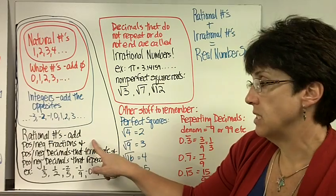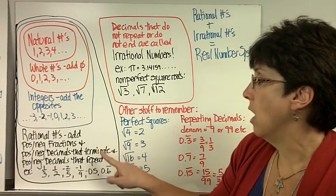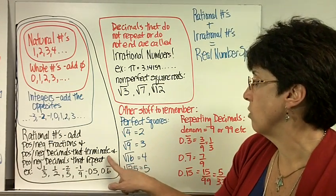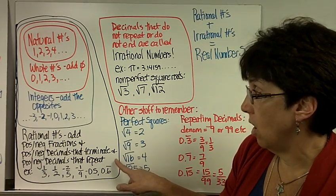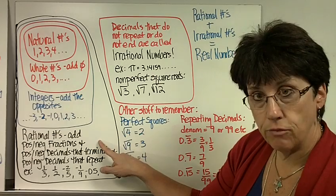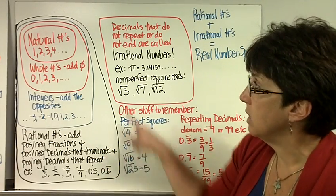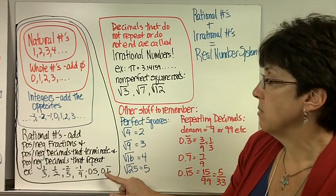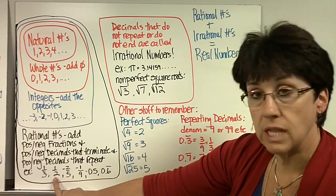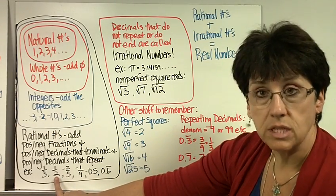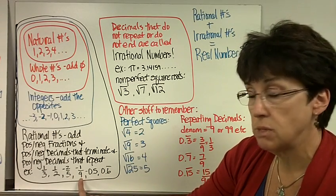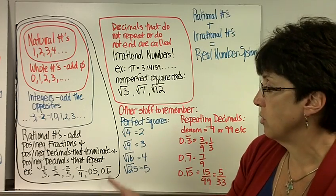Now, if we add positive and negative fractions, positive and negative decimals that terminate, and positive and negative decimals that repeat, we have our integers plus positive and negative fractions plus most decimals — if they terminate or repeat — those are all rational numbers. Some examples: one-third (that's a repeating decimal), one-half (same as 0.5), negative two-fifths, negative one-ninth (remember that's a repeating decimal), negative 0.5, and 0.6 repeating.